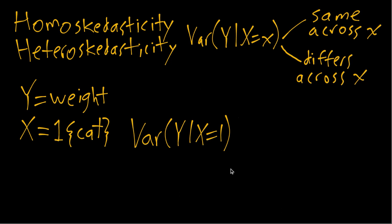And then we're interested in comparing that to the conditional variance of weight for the non-cat subpopulation. Now if you imagine the non-cats include all sorts of animals from birds to dogs to horses,